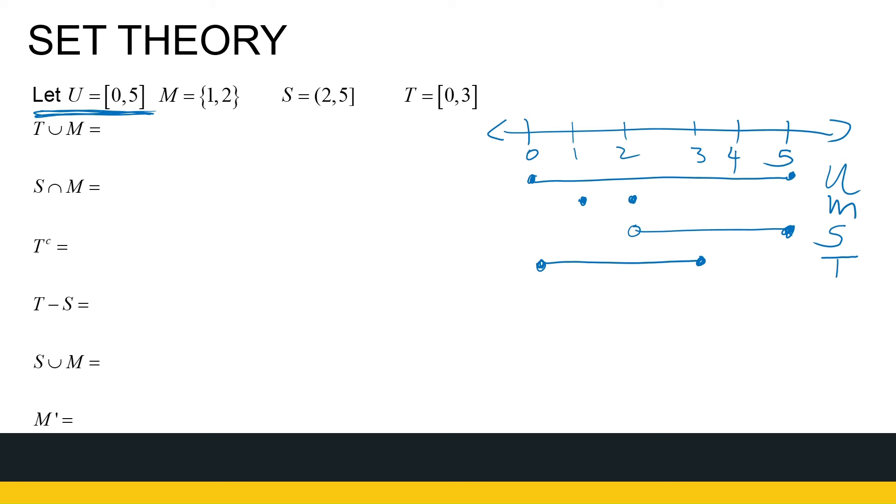T union M. Put them together. T and M. Now, if you look at M, M has the numbers one and two in. But they're already inside T. So T union M is a bit boring. It just has, it's just the set T. Everything from zero to three. So you can write it like this. Or you can just write T. Because everything, both elements from M is already in there.